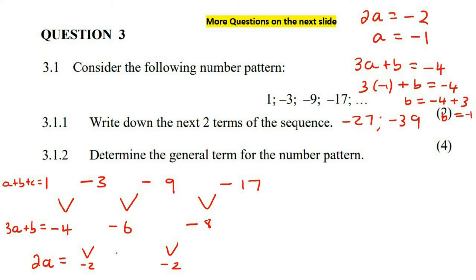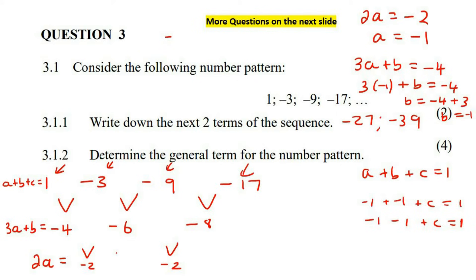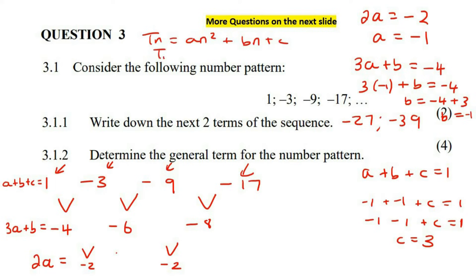Now you come up to the last step. You go A plus B plus C equals to 1. A is negative 1, B is negative 1, equals to 1. If you take the minus 1s over to the other side, you should eventually end up with C as 3. So we know that a quadratic formula is A n squared plus B n plus C, where A is negative 1, B is negative 1, and C is 3.